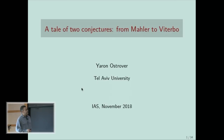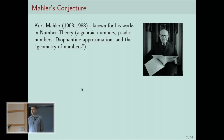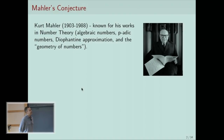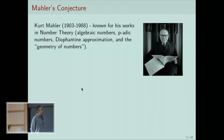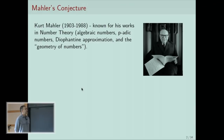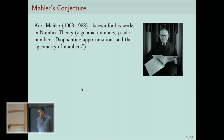Let me start with Mahler's conjecture. Kurt Mahler was a German-born mathematician who, as far as I know, has no relation with the famous composer. He is known mostly for his works in number theory, and in particular he has several results in what is called the geometry of numbers, which is, roughly speaking, the relation between the existence of certain integer vectors and volume of convex bodies in n-dimensional space.